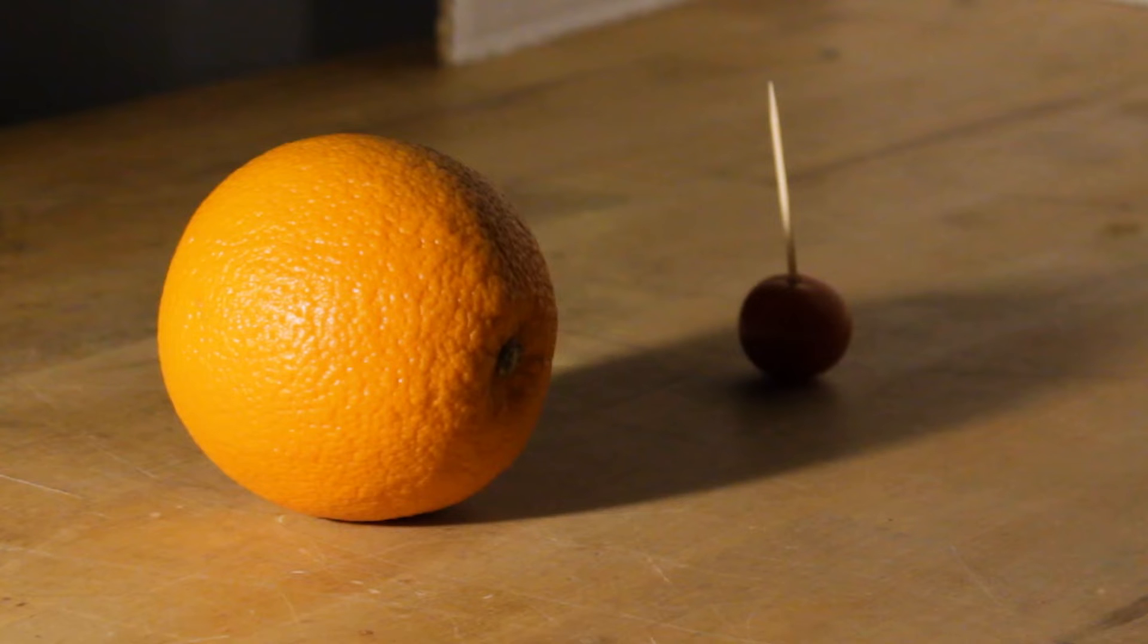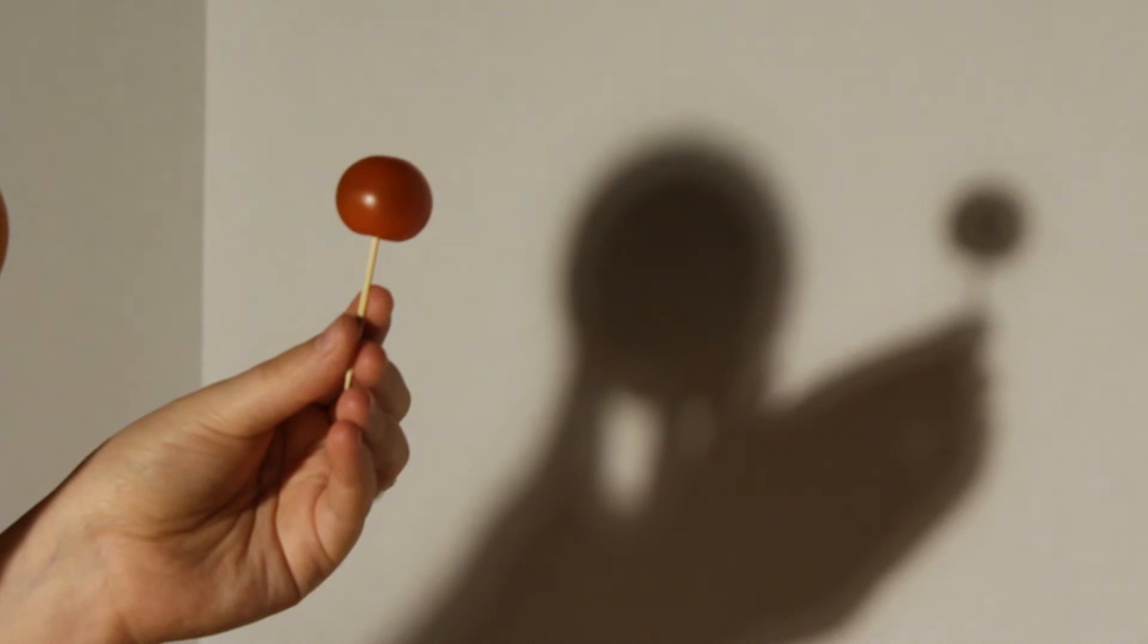The classic demonstration for lunar and solar eclipses can be done with an orange and a cherry tomato. To visualize a lunar eclipse, we have our tomato, which represents the moon, pass through the shadow cast by the orange that represents Earth.